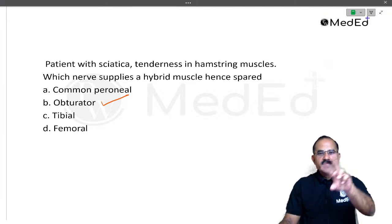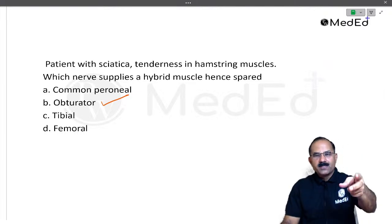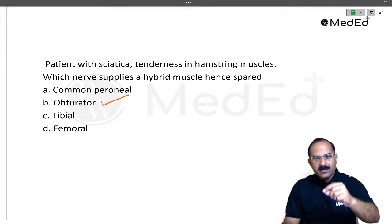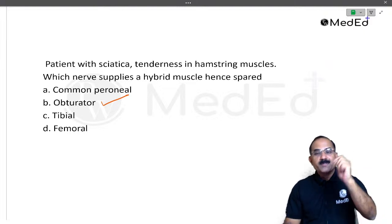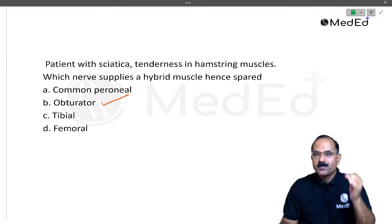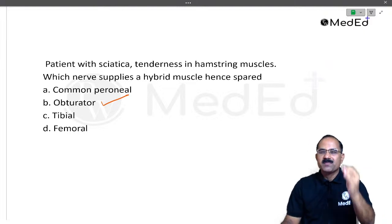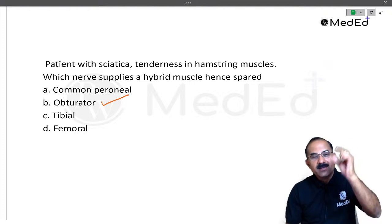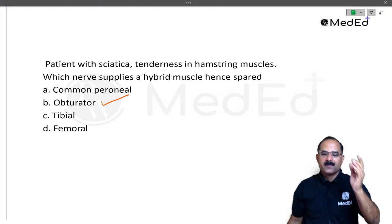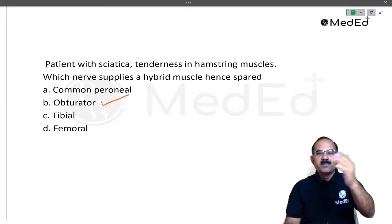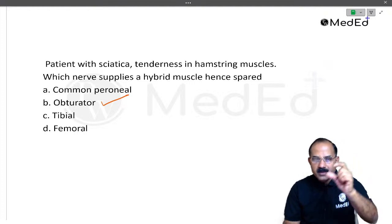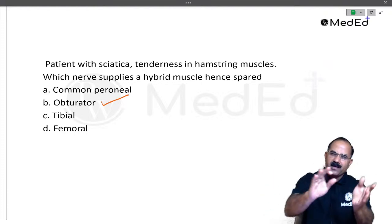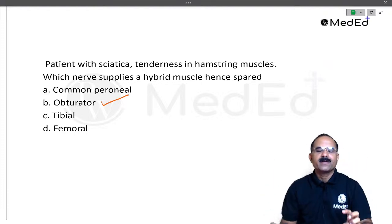The nerve supplying the hybrid muscle in the posterior compartment of the thigh is the obturator nerve — specifically the posterior division of the obturator nerve, which supplies the adductor part of adductor magnus. The hamstring part is supplied by the tibial part of the sciatic nerve, so adductor magnus would be partly paralyzed.